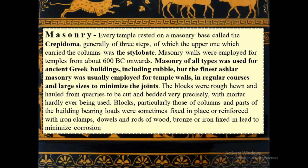Every temple rested on a masonry base called the krepidoma, generally of three steps, of which the upper one which carried the columns was the stylobate. Masonry walls were employed for temples from about 600 BC onwards. The finest ashlar masonry was usually employed for temple walls, in regular courses and large sizes to minimize the joints. The blocks were rough-hewn and hauled from quarries to be cut and bedded very precisely, with mortar hardly ever being used. Blocks, particularly those of columns and load-bearing parts, were sometimes fixed in place or reinforced with iron clamps, dowels, and rods of wood, bronze, or iron fixed in lead to minimize corrosion.